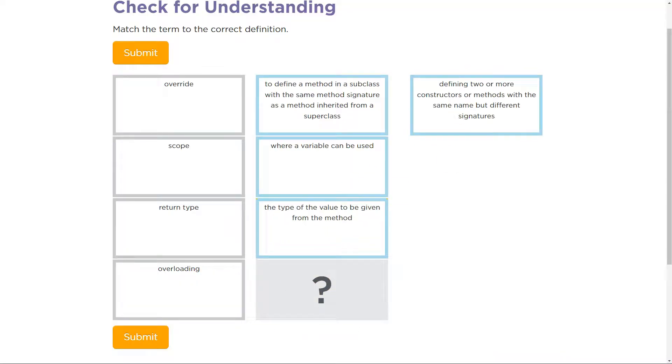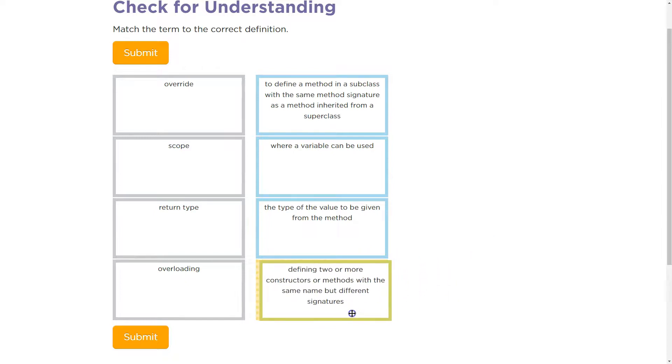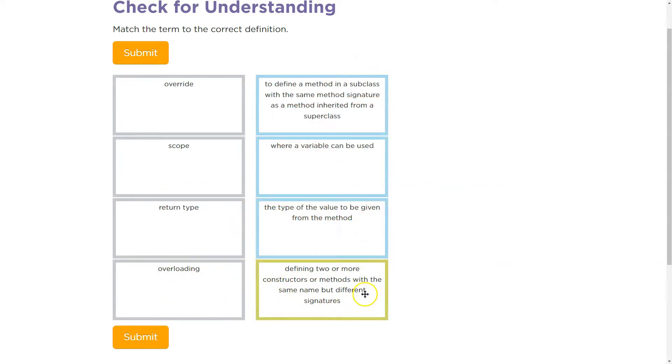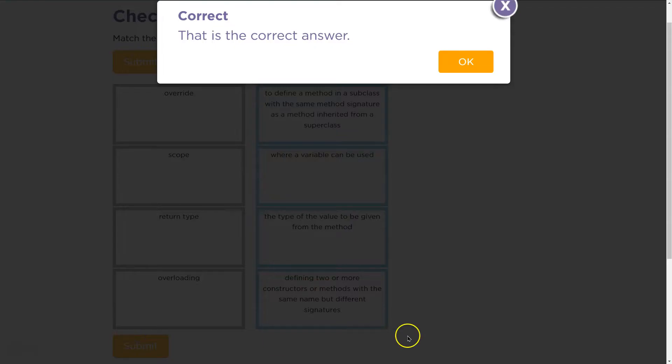Now through process of elimination: defining two or more constructors or methods with the same name but different signatures. Different signatures - maybe one has two parameters or something like this. Cool. Overloading, right? Because you can add stuff to it, you're loading it up, whereas overriding would be identical. Make sure to use your resources. Onward.